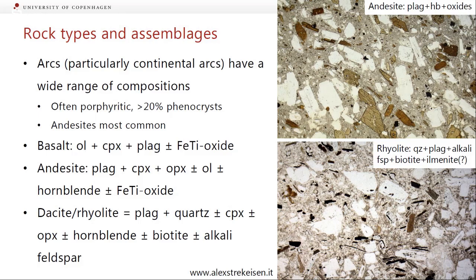In this andesite thin section the brown to beige things are hornblende in different orientations — you can see the pleochroism changing from quite dark brown to fairly pale depending on crystal orientation. In between is mainly plagioclase — big white minerals — and some opaque oxides. Those oxides are generally equant and irregular in shape. In the rhyolite, the pale minerals are a mix of plagioclase and alkali feldspar, plus quartz which tends to be more rounded. There's biotite — one perfect cleavage and brown colour. The opaques are needle-shaped, probably ilmenite.